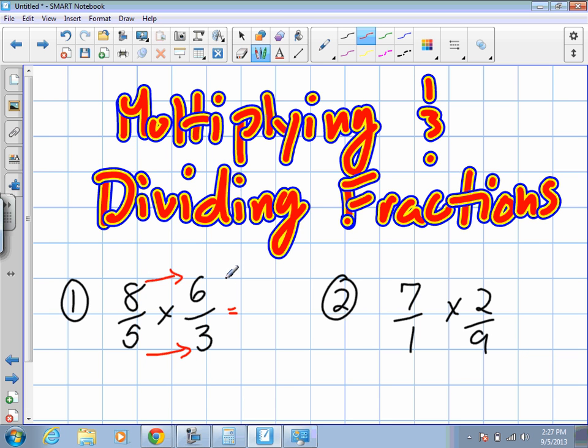So, 8 by 6 is... Yeah, what is it? 48, good. And 5 times 3? 15. Oh, why did I write a 3 there? What is it supposed to be? 8 and 15. And that's it, that's your answer. It's 48 over 15.